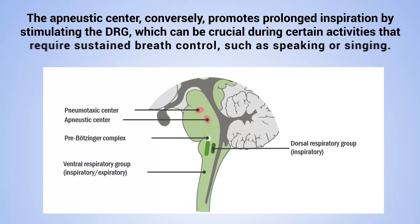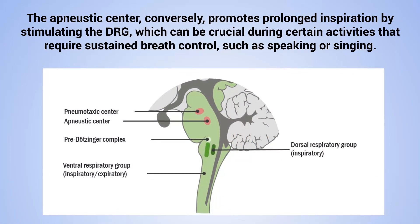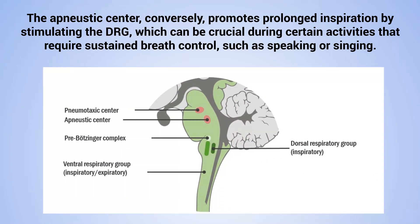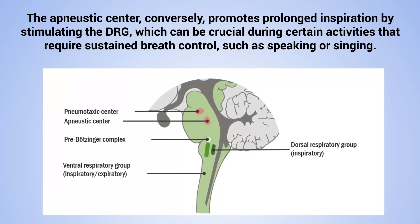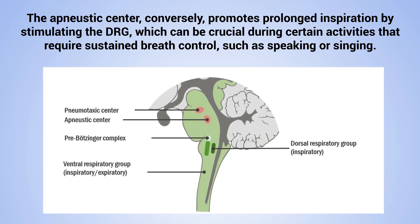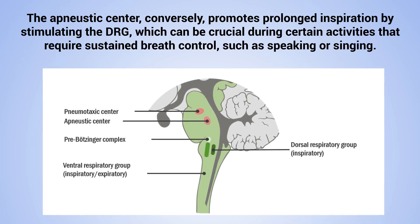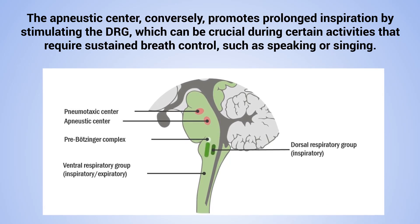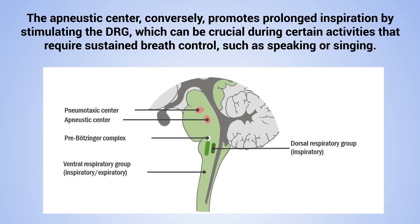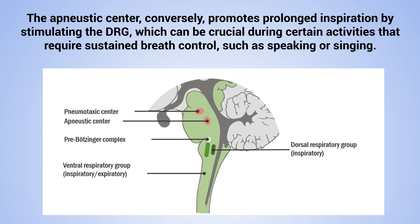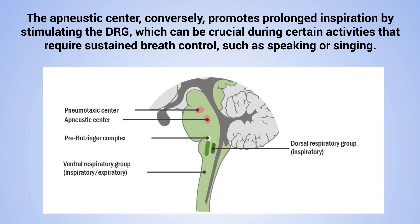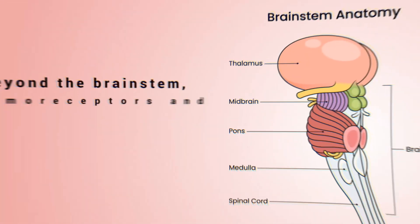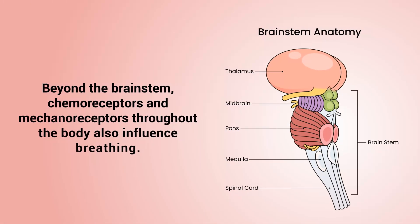The apneustic center, conversely, promotes prolonged inspiration by stimulating the DRG, which can be crucial during certain activities that require sustained breathing control, such as speaking or singing.